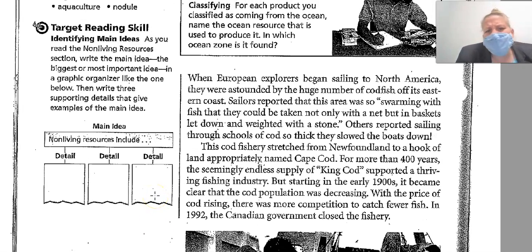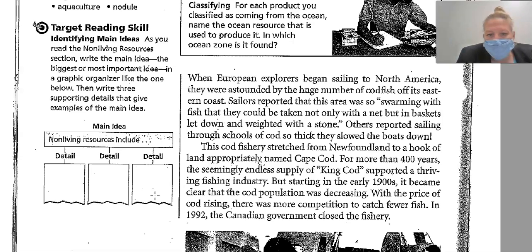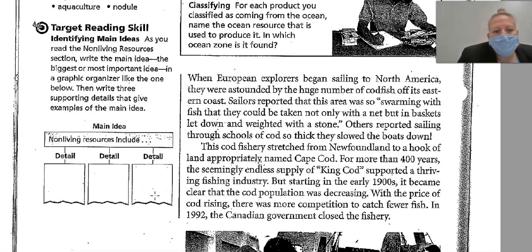When the Europeans began sailing to North America, they were astonished by the huge number of codfish off its eastern coast. Sailors reported that this area was so swarming with fish that they could be taken not only with a net, but in baskets left in and weighted with a stone. Others reported sailing through a school of cod so thick that they slowed the boats down. This cod fishery stretched from Newfoundland to a hook of land appropriately named Cape Cod. For more than 400 years, the seemingly endless supply of king cod supported a thriving fishing industry.